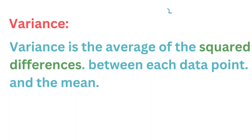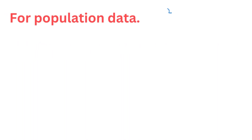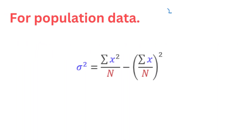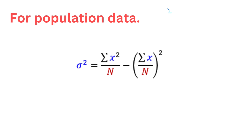Variance is the average of the squared differences between each data point and the mean. For population data, the variance can be found by using the formula shown. For sample data, the variance can be found by using a separate formula.